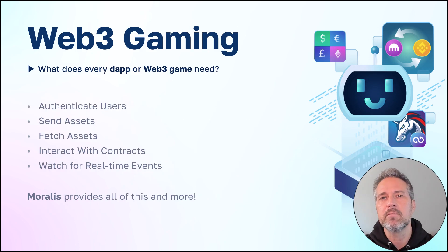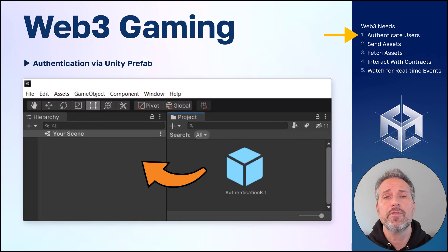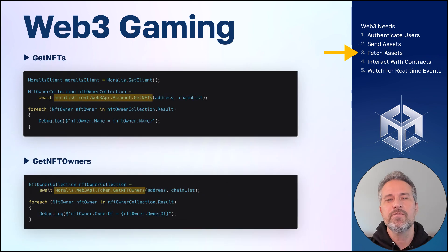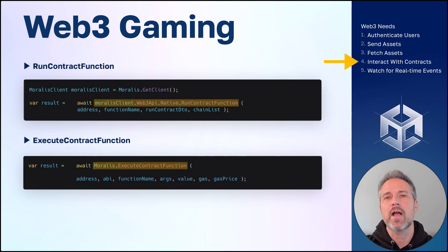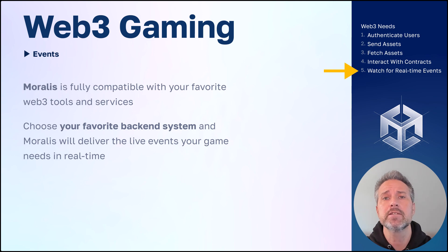So what does every dApp and Web3 game need? It needs to authenticate users, send and fetch assets, interact with contracts, and observe real-time events from those contracts. Morales does all this and more. To authenticate users with Morales, you use the Authentication Kit prefab — drag that into your scene and your authentication is handled. To send assets, we can use Execute Contract Function, for example to mint an NFT. To fetch assets from the blockchain, Morales offers many options including GetNFTs and GetNFT Owners. For contract interaction, Morales offers RunContract Function for read operations and ExecuteContract Function for read and write operations. For real-time events, Morales is fully compatible with your favorite Web3 tools and services, connecting to your favorite backend to receive live events in real-time.